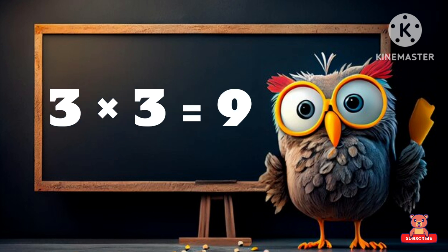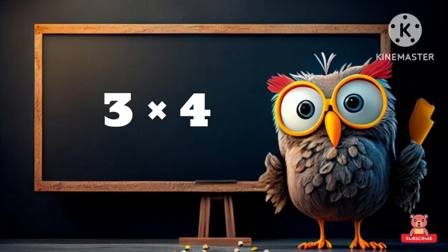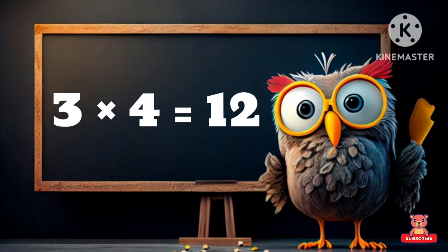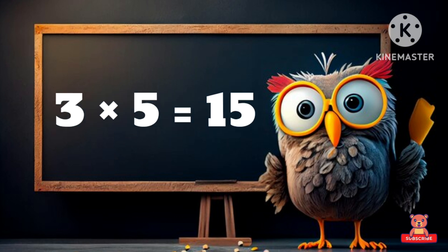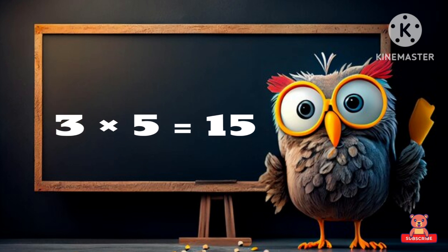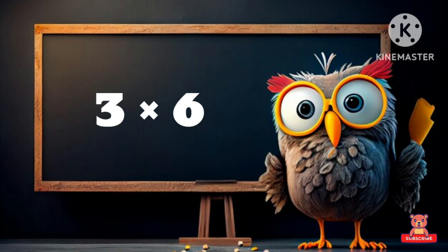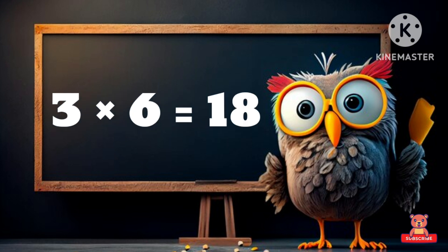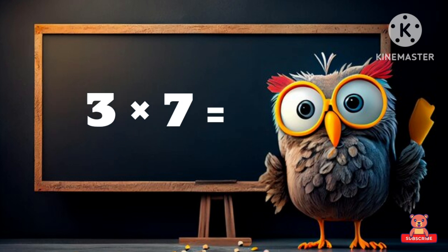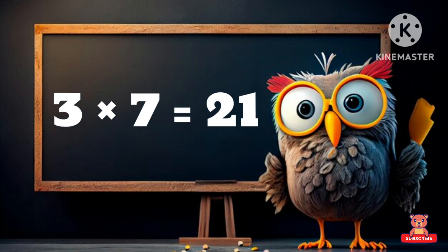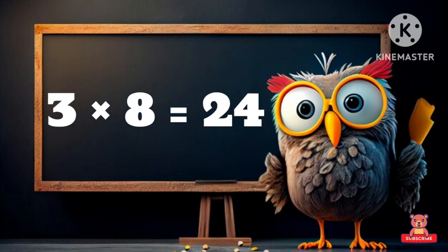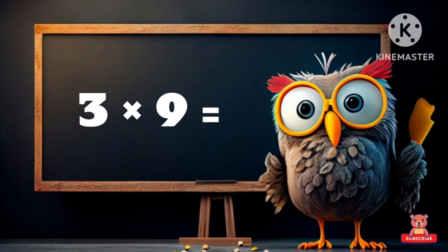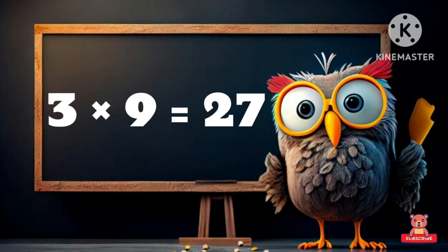Three three's a nine, three four's a twelve, three five's a fifteen, three six's a eighteen, three seven's a twenty-one, three eight's a twenty-four, three nine's a twenty-seven.